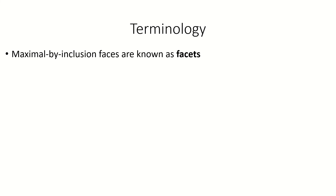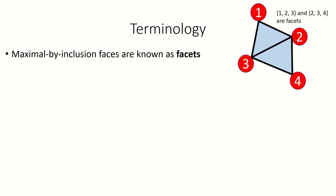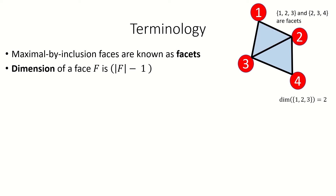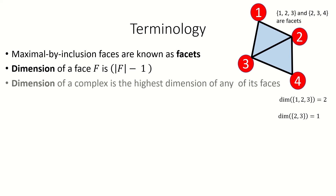Let's cover a little more terminology. A facet of a complex is a face that's not a subset of any other face. In this complex, the faces {1,2,3} and {2,3,4} are facets. We define the dimension of a face to be one less than the number of vertices in that face. For example, the dimension of face {1,2,3} is 2 and the dimension of face {2,3} is 1. The dimension of the entire complex is the maximum dimension of any of its faces. The dimension of the complex shown here is 2.